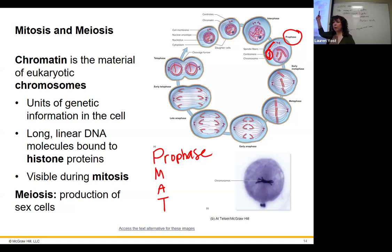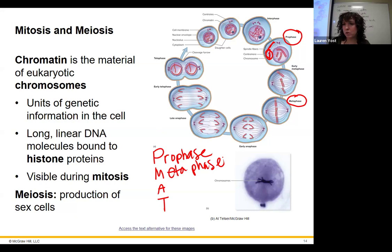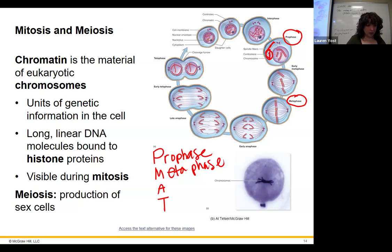Prophase — we're getting everything ready: doubling up DNA, concentrating it, and getting spindle fibers set. 'Pro' means before. Next is metaphase — the biggest, most obvious one. We line up all the chromosomes at the equator of the cell and get ready to pull them apart. The spindle fibers and centrioles get them into place.